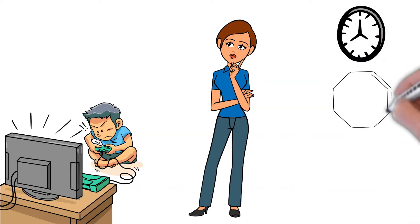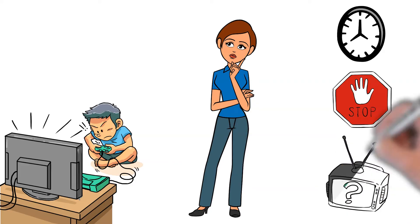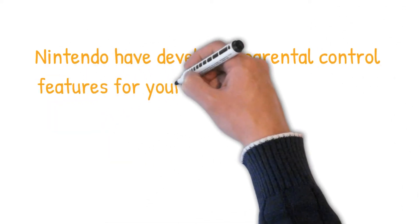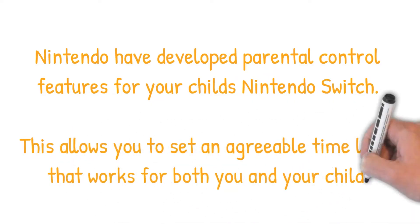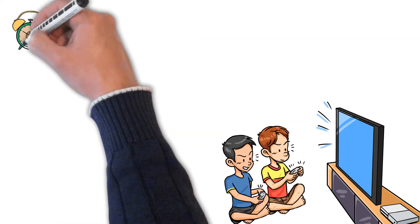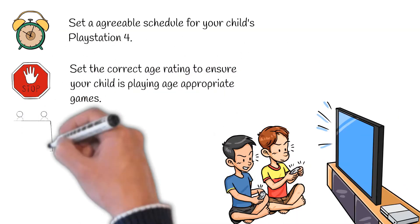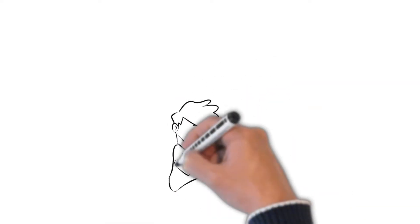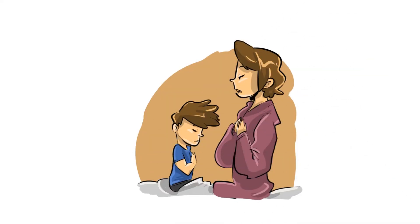It's important to have appropriate filters in place to make sure your child is not exposed to anything that isn't right for their age, and that all apps and games are set to the correct age rating. Nintendo have developed parental control features for the Nintendo Switch, allowing you to set an agreeable time limit that works for both you and your child. It's really important that these tools aren't used as a form of punishment — it's about sitting down with your child and explaining the importance of their digital well-being.